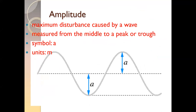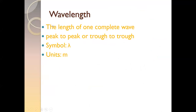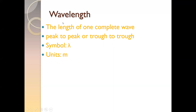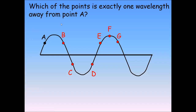Amplitude is the maximum disturbance caused by the wave. It can be measured from the middle to the peak, or from the middle to the trough. The symbol used is small 'a' and the SI unit of amplitude is meter. Wavelength is the length of one complete wave — from peak to peak or from trough to trough. It is denoted by the Greek alphabet lambda, and the SI unit of wavelength is meter because it is a length.